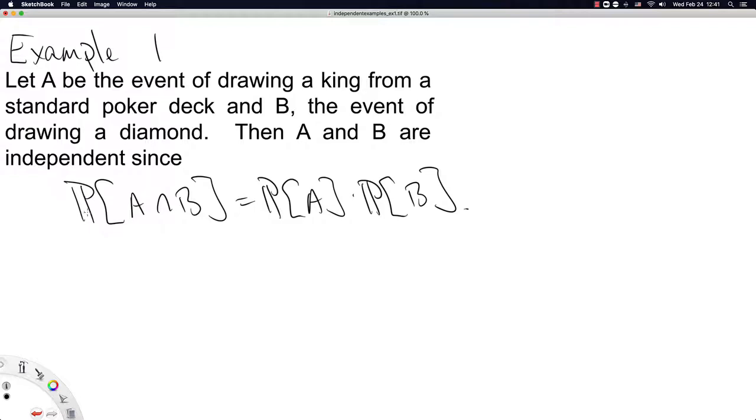So the way we're going to show that this equation holds is by calculating the left-hand side first. So A is a king and B is a diamond. So a king and a diamond indicates to us that we are drawing the king of diamonds. There's only one such card in 52 cards, so that probability is one out of 52.